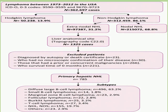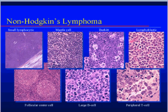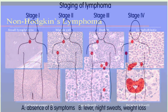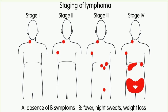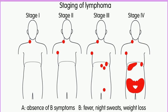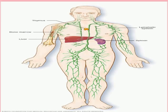Non-Hodgkin lymphoma is further classified into a variety of subtypes based on the cell of origin — B-cell or T-cell — and the cell characteristics. The subtype of non-Hodgkin lymphoma predicts the necessity of early treatment, the response to treatment, the type of treatment required, and the prognosis. Non-Hodgkin lymphoma is much more common than Hodgkin lymphoma.